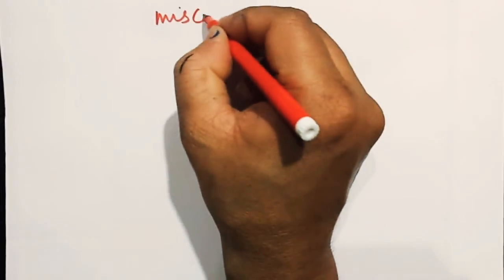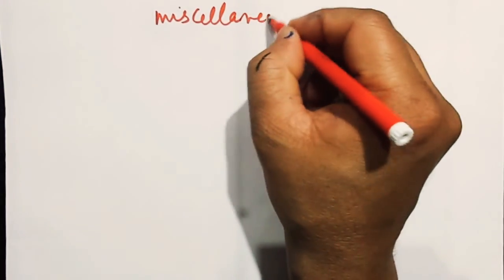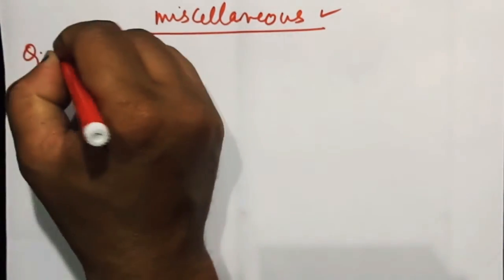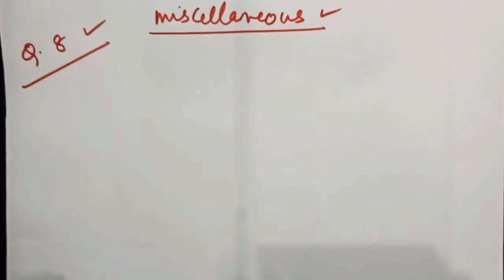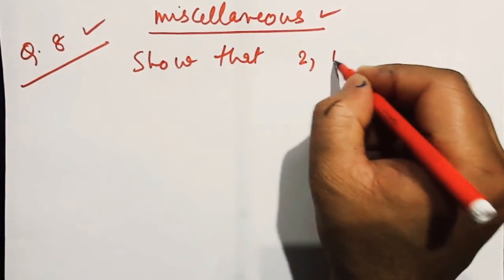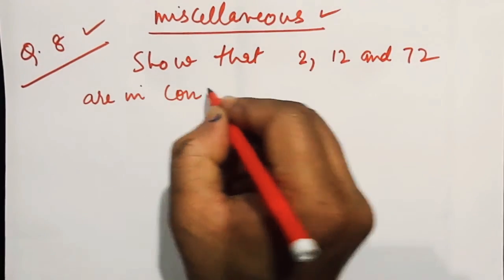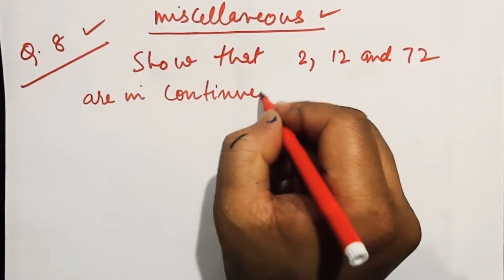Now the last one, number 8. Since we are solving miscellaneous sums, naturally you will get different varieties. My happiness is because this is the end of our chapter, not only exercise but chapter. Show that 2, 12, and 72 are in continued proportion.